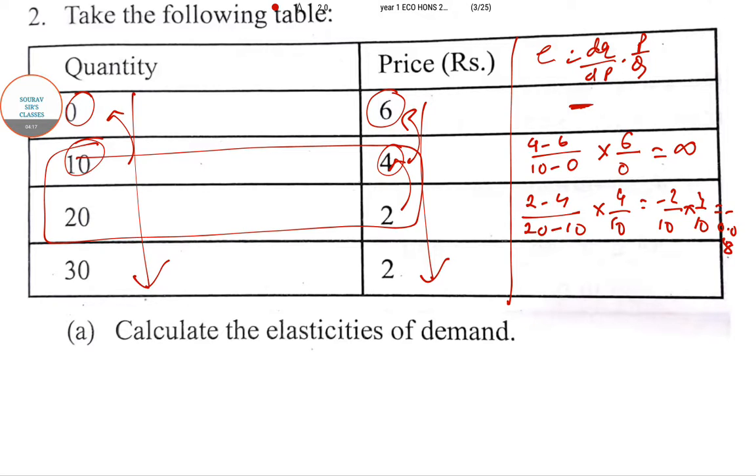The last one you can calculate as well: 22 - 2, but there is no price change so anyway this will be 0.